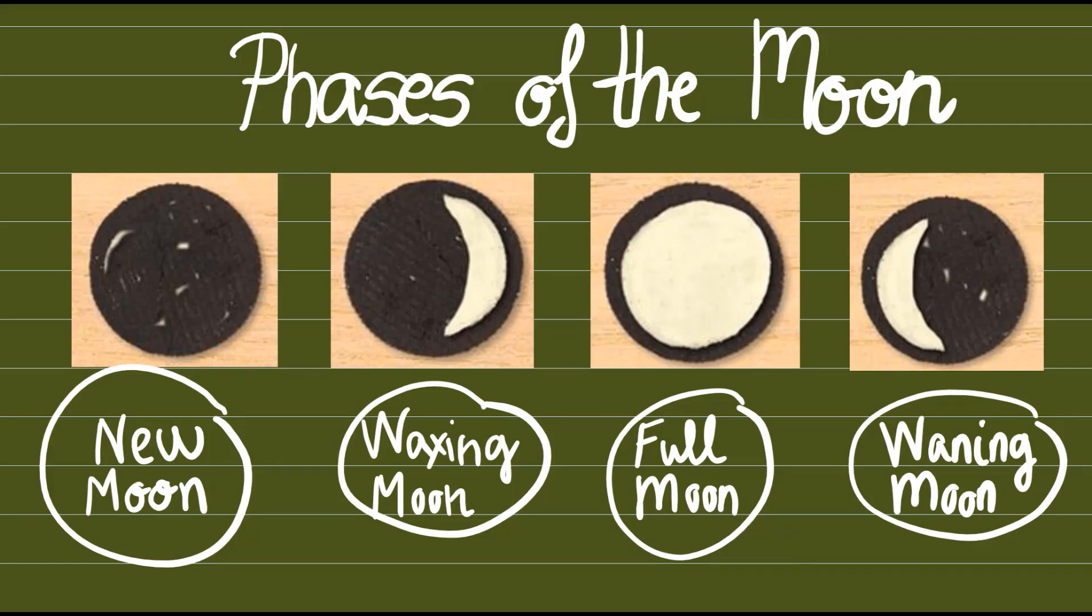Como truquillo, cuando hay waxing moon o luna en fase creciente, la luna tiene forma de letra D. Y cuando hay waning moon o luna en fase menguante, o sea que la luna cada vez se está haciendo más pequeñita, la luna tiene la forma de la letra C.